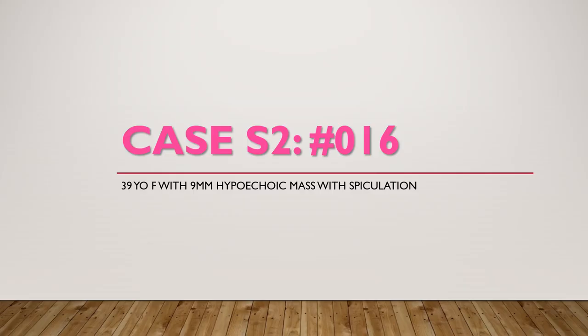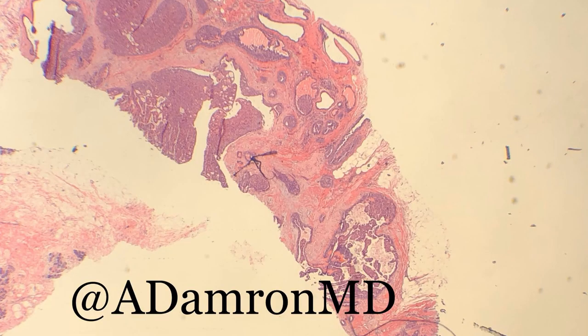Moving on to case number two: a 39-year-old female with a 9-millimeter hypoechoic mass with spiculation. On low power, your first thought is this could be DCIS — that's the initial gut reaction most people have when you see this much proliferation within an intraductal process. But let's take a look at some things we can notice on low power. You can see this central elastosis — this is really a sclerosing lesion. It looks like it's probably papillomatous here.